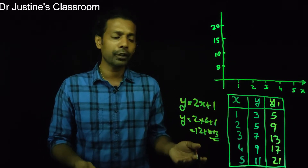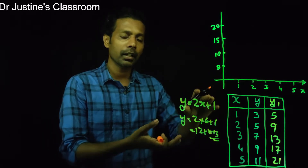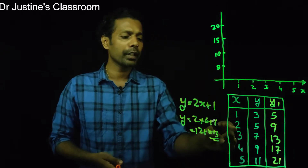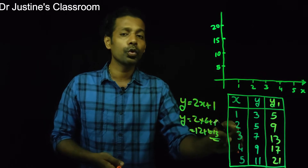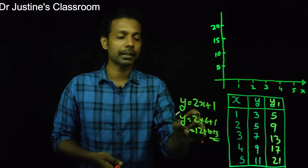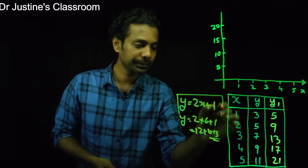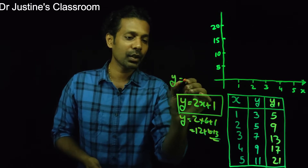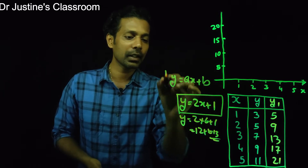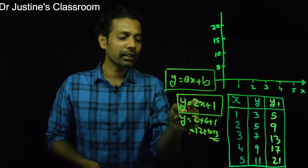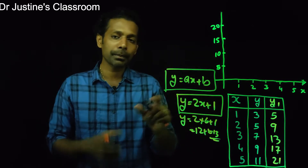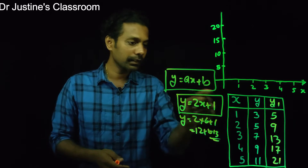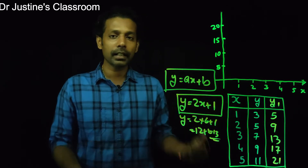The benefit of this equation is that you can find any value in between as well. For example, if you want to find the score of Y when X is 2.5, you can use this equation. Notice that this equation Y = 2X + 1 follows the same pattern as the equation of a straight line, Y = AX + B. That means X and Y are forming a straight line relationship.